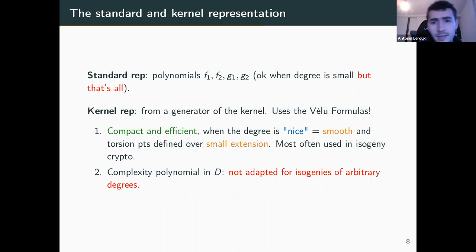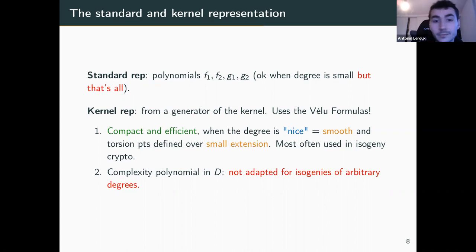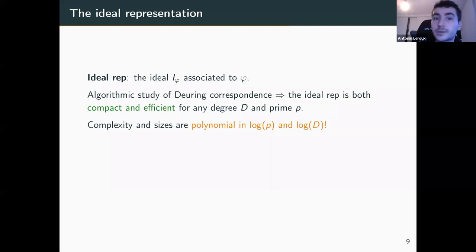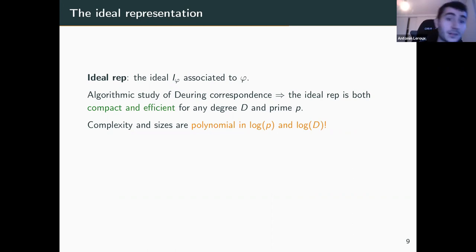For arbitrary degrees we have all the necessary tools with the Deuring correspondence. This is where I define the ideal representation, which is basically the ideal associated through the Deuring correspondence to my isogeny. I can represent that through 16 coefficients over Z that give a basis in the quaternion algebra of my ideal. Thanks to the nice algorithms from studying the Deuring correspondence, this representation is both compact and efficient for any degree d and prime p, with complexities and sizes polynomial in log p and log d.